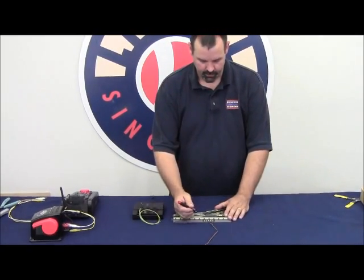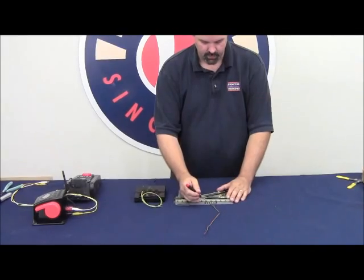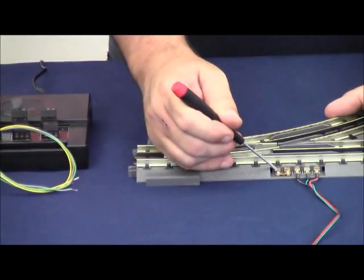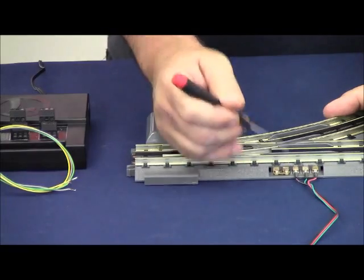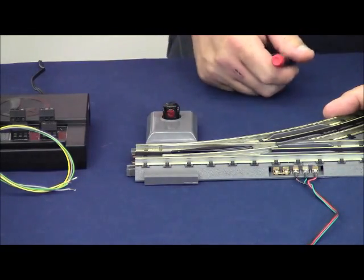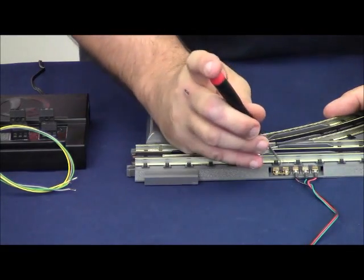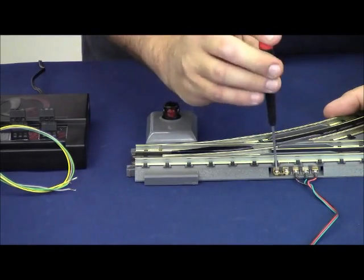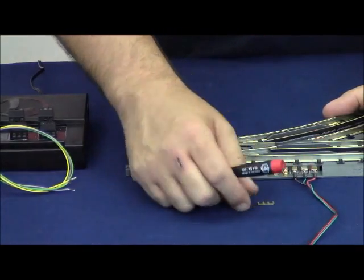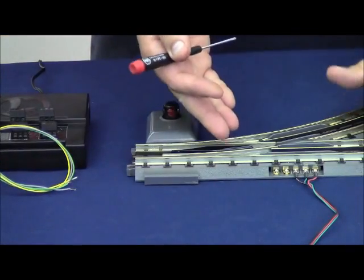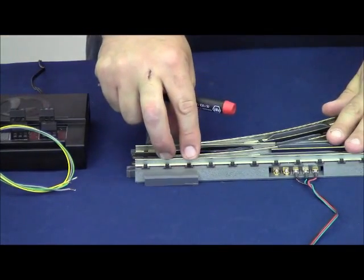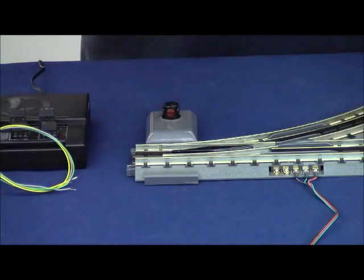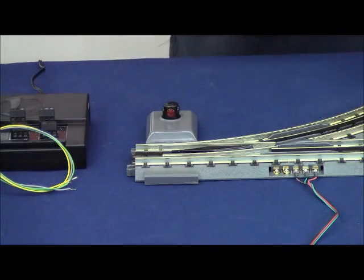It's important to note that the MTH switch has a jumper between the track voltage, center rail track voltage out, and the auxiliary in pin on the terminals here. So we're going to remove that jumper because in a command control environment we could be running as much as 18 volts on the track or running conventionally through the remote and increasing and decreasing the track voltage.